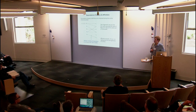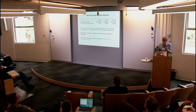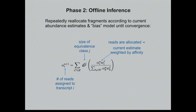We end up with this much smaller problem, and then run a straightforward offline inference: we iteratively update the number of reads assigned to each transcript by assigning reads in an equivalence class proportional to the current abundance of the transcript times the affinity, and repeatedly reallocate until convergence.